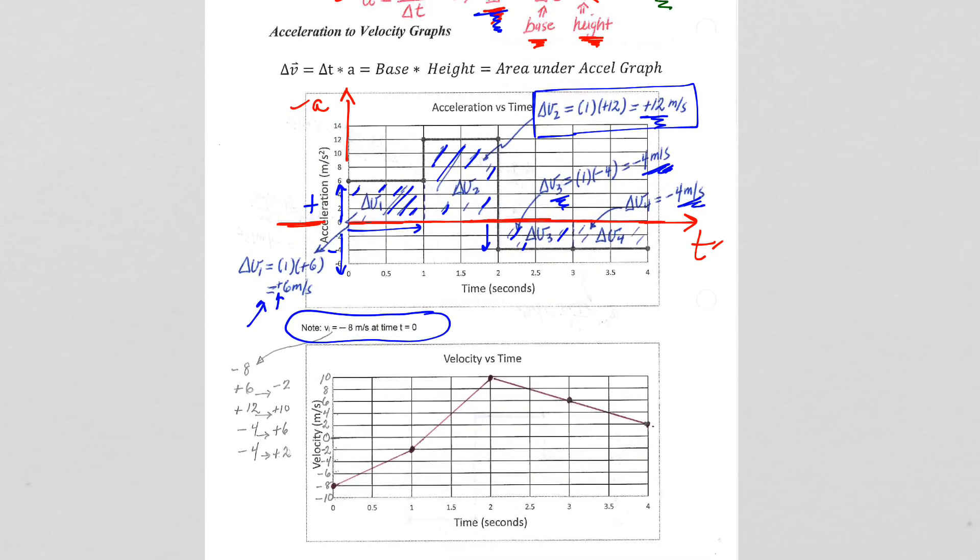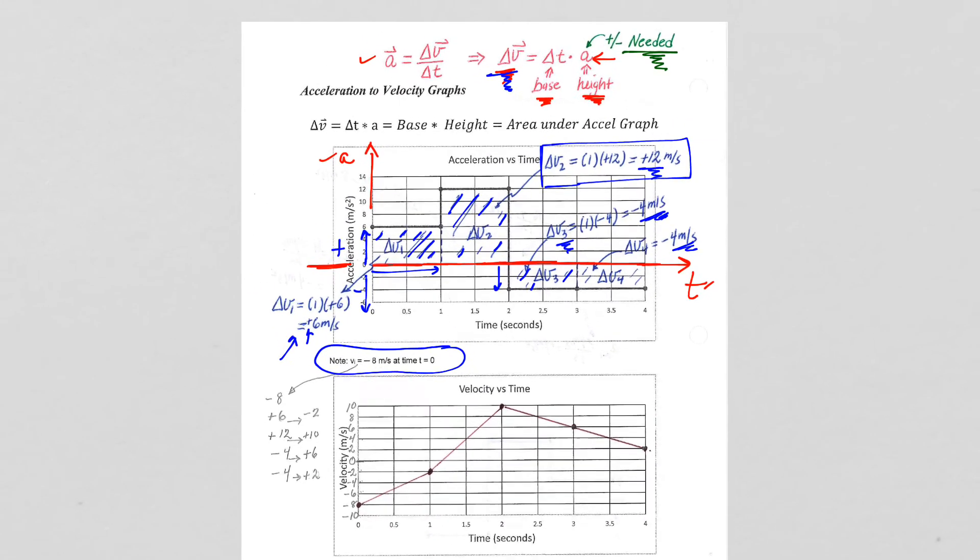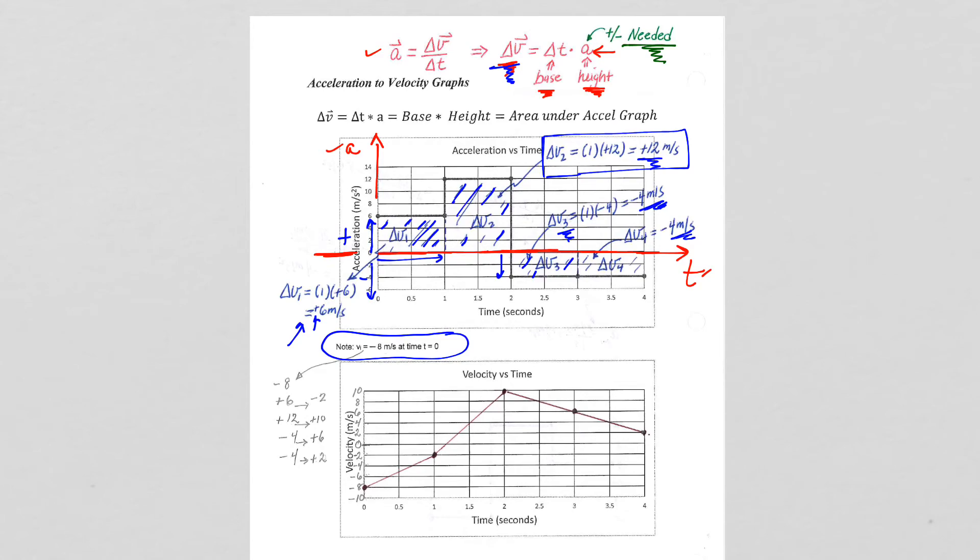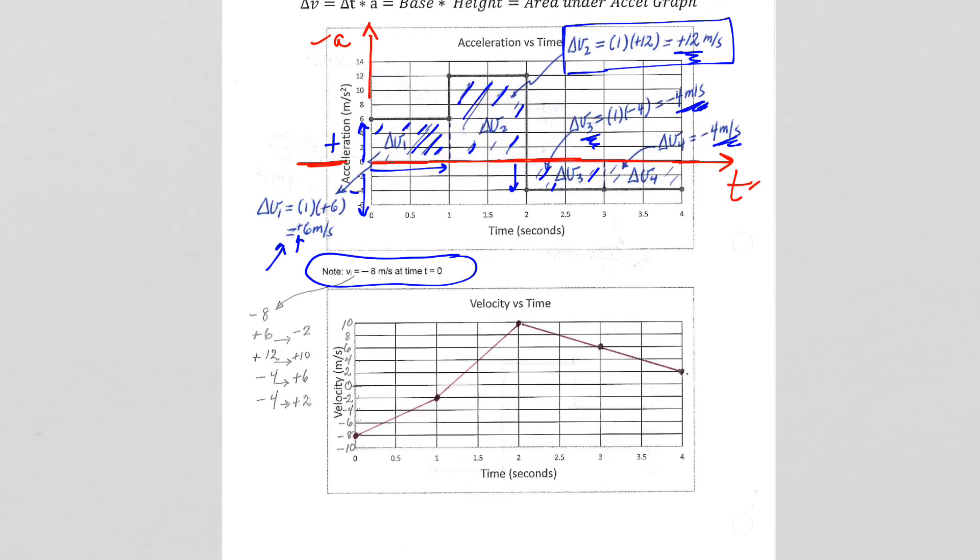So my velocity graph. Anytime we're using area to calculate a graph, we're basically connecting the dots. So I have my delta Vs nicely calculated above. I know my initial velocity is negative eight. And then I went up six. My delta V, I increased by six. So I don't go to position six. It's connect the dots after you increase by six.